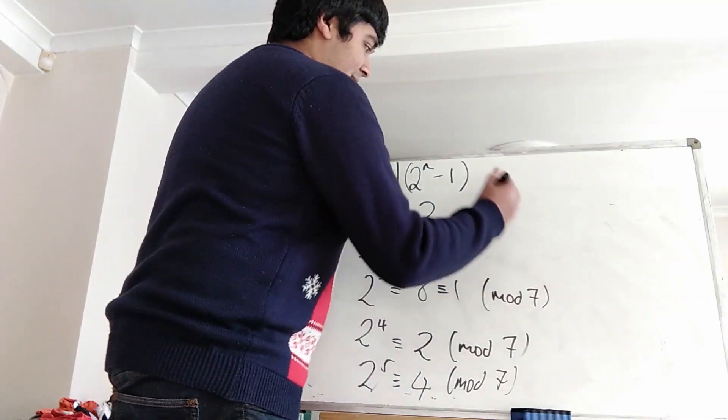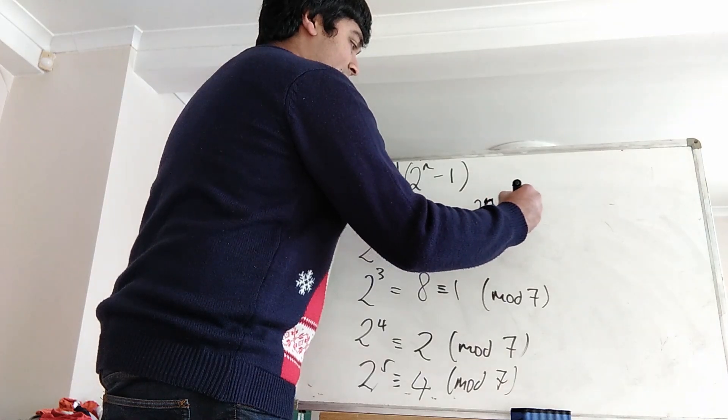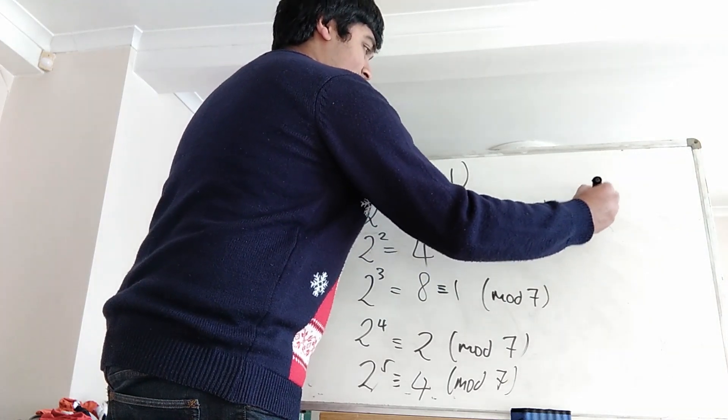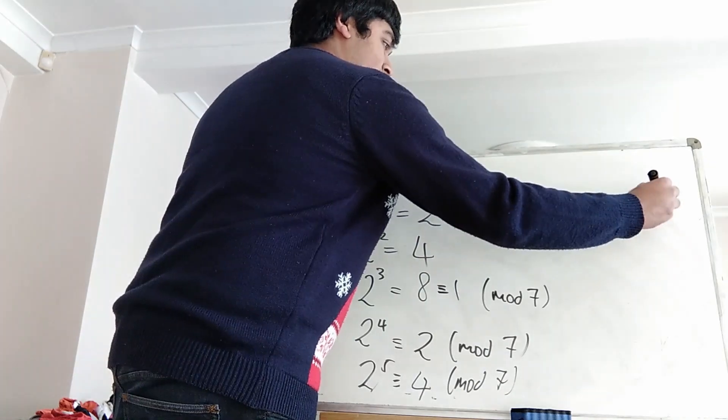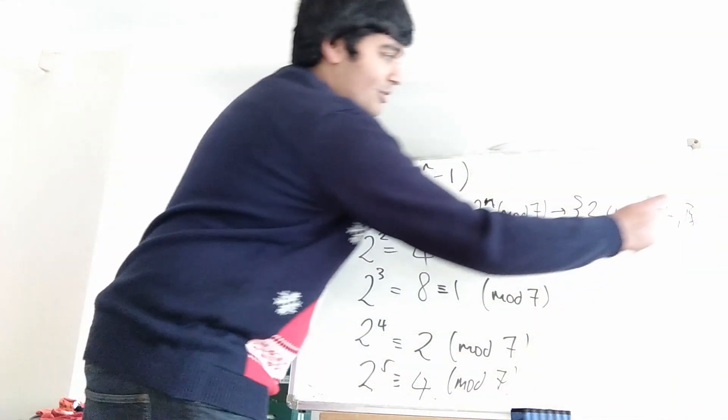So let me just write that up. 2 to the n mod 7 gives us this sequence of numbers. It goes 2, 4, 1, 2, 4, 1 and so on.